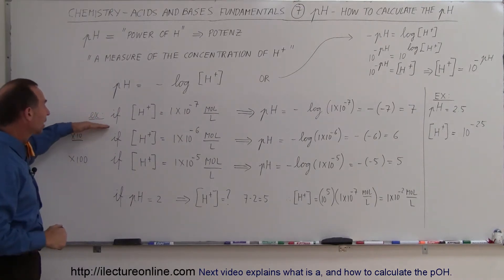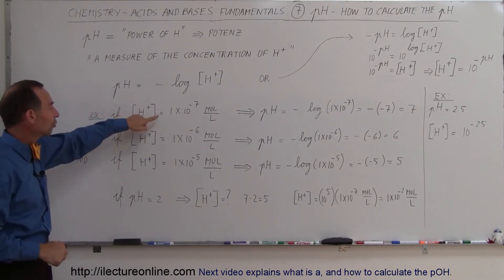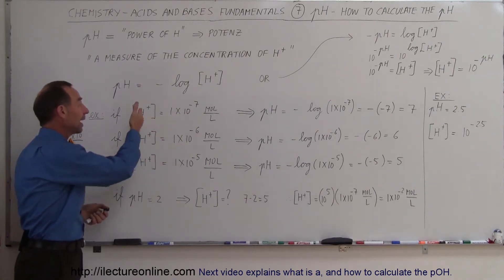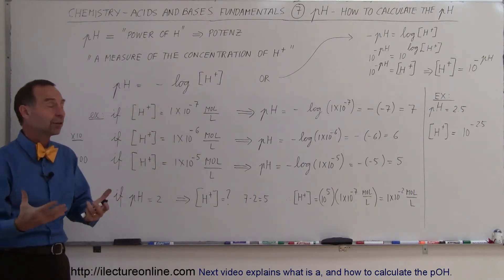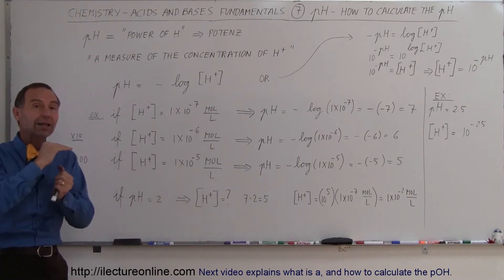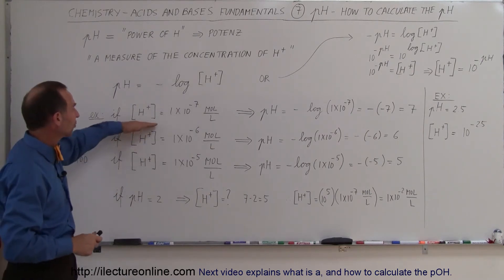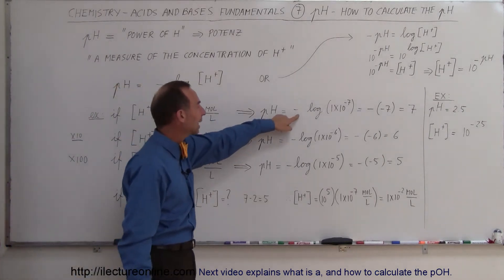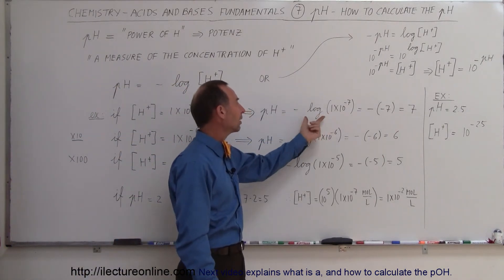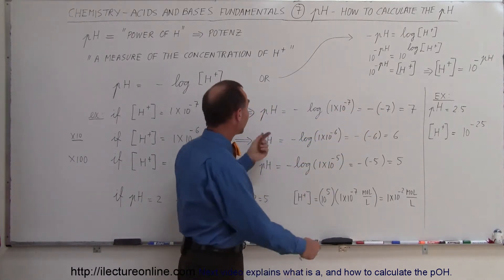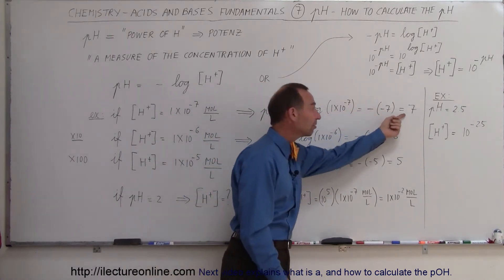So here is an example. If the concentration is 1 times 10 to the minus 7 moles per liter, that would be the concentration of hydrogen in pure water at 25 degrees centigrade. That is the neutrality of the solution. If you throw that into the equation, the pH equals the negative of the log of this number. When you take the log of 10 to the minus 7, you get back the exponent. And the negative here turns the negative into a positive.